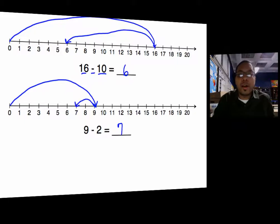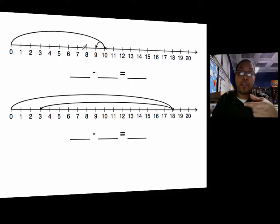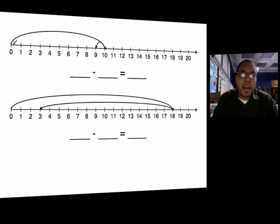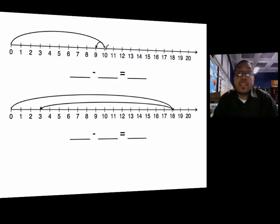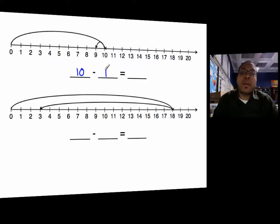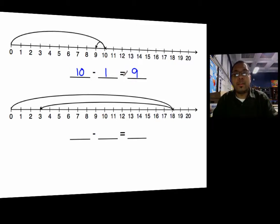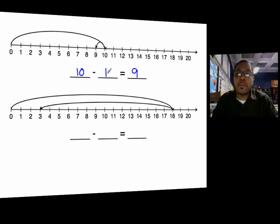Now what happens when the problem hasn't been modeled for you and you have to read an actual model to write the original equation? Looking at this model, it's going from 0 to 10 — so that's 10. Now I'm at 10. What direction am I moving? To the left — one number to the left. So it must be 10 minus 1, and I get to 9. So 10 minus 1 equals 9. The equal sign means "is the same as" — so 10 minus 1 is the same as 9.